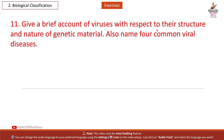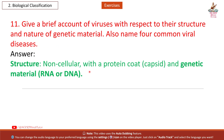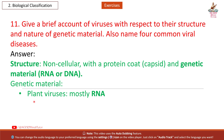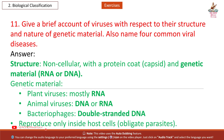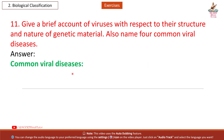Question 11: Give a brief account of viruses — structure and nature of genetic material; also name four common viral diseases. Answer: Structure — non-cellular, with a protein coat (capsid) and genetic material (RNA or DNA). Genetic material — plant viruses: mostly RNA; animal viruses: DNA or RNA; bacteriophages: double-stranded DNA. They reproduce only inside host cells — obligate parasites. Common viral diseases: AIDS (HIV), influenza, herpes, mumps.